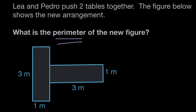So let's fill in some of those first. Because these tables are rectangles, opposite sides are equal, so if this side down here is one meter, then this side up here has to be one meter. Same here, if this is three meters, the opposite side is also three meters.